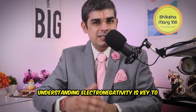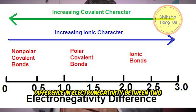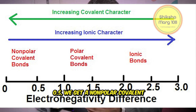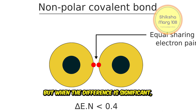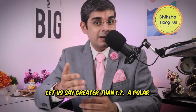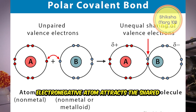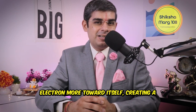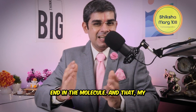Electronegativity and Bond Types: Understanding electronegativity is key to predicting bond types. When the difference in electronegativity between two atoms is small — let's say less than 0.5 — we get a non-polar covalent bond, where electrons are shared equally. But when the difference is significant — let's say greater than 1.7 — a polar covalent bond forms. Here, the more electronegative atom attracts the shared electrons more toward itself, creating a slightly negative and slightly positive end in the molecule.